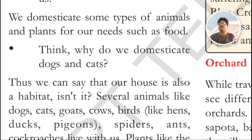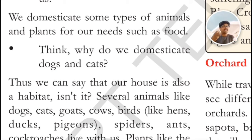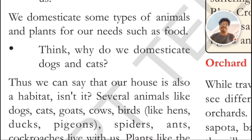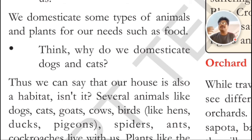We domesticate some types of animals and plants for our needs, such as food. Domesticate means we grow them in our house and take care of them. Can you name some animals that we domesticate for food? Students, what types of animals do we domesticate for our food? Shashi, can you tell me?